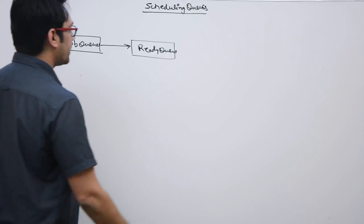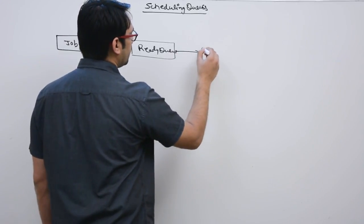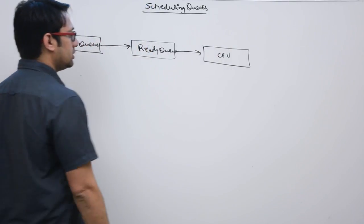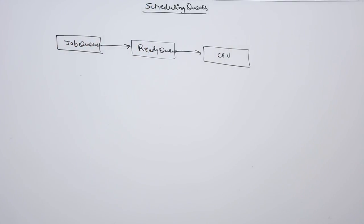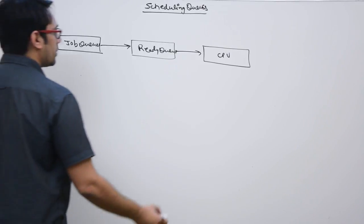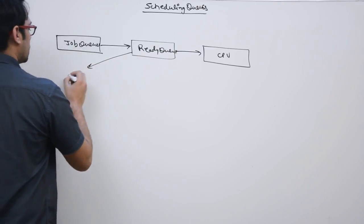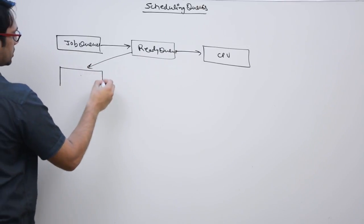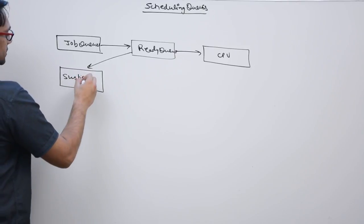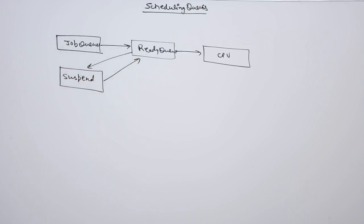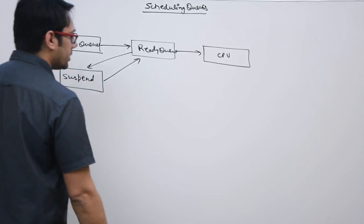From the ready queue we take a process and execute it inside the CPU. From this ready queue, a process can also go to the suspended state — we have a suspended queue — and from the suspend queue the process can go back to the ready queue.